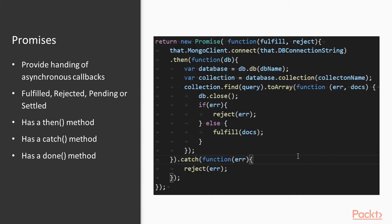As you can see here, we're returning a new promise that contains a function — a callback with two arguments: one 'fulfill' and the other 'reject'. We're calling the connect method on the Mongo client to connect to a MongoDB. When the connection is completed, the 'then' method gets triggered and we do a query. If we get some documents, we trigger the 'fulfill' method. If we don't get any documents or there's an error, we trigger the 'reject' method. Here we do a catch to handle any error that passes through, and then all we have to do is pass a method to those function calls.